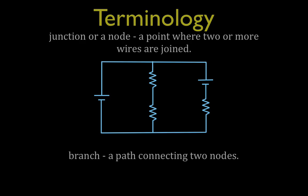Before we actually get to applying the rules, there are some terms you should be aware of — really just two terms. One of the terms is either junction or node. I like to use the term node; some people say junction, I've heard people say branch point. A node is a point where two or more wires are joined or come together. You can see in this circuit we have node number one, and we have another node down here.